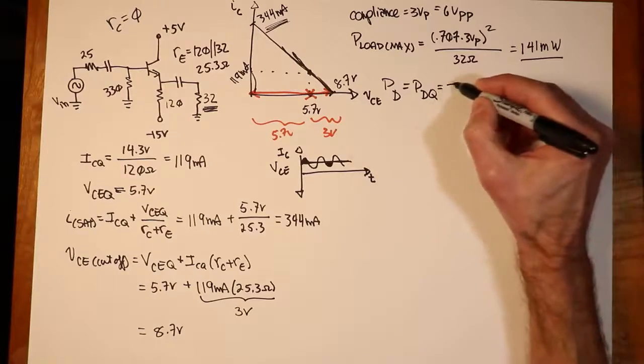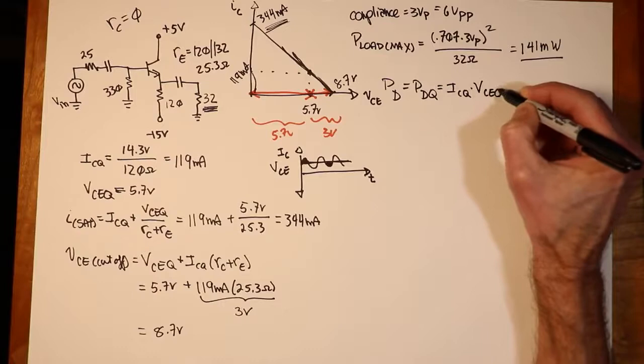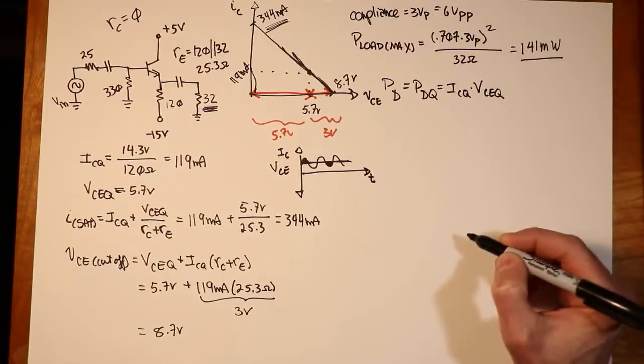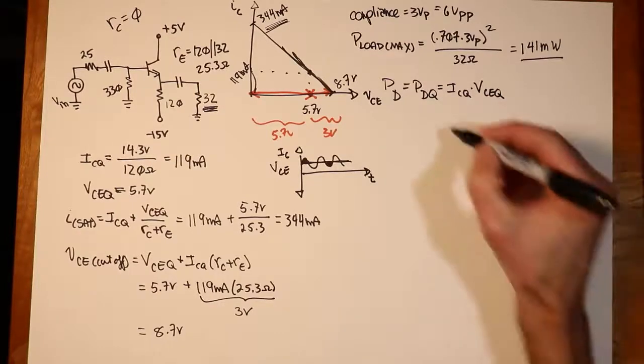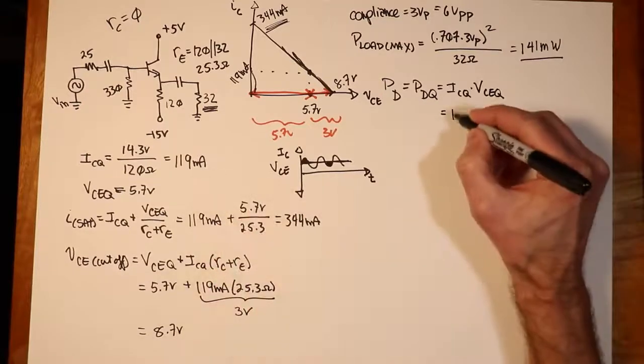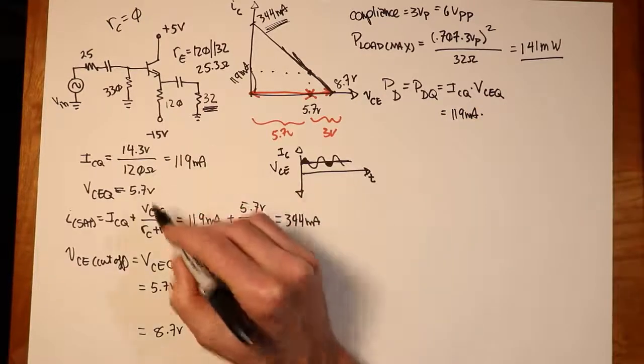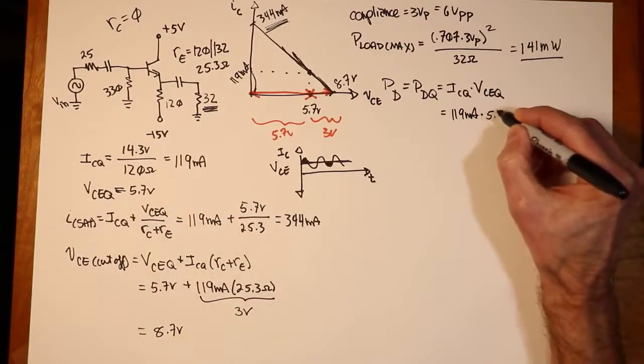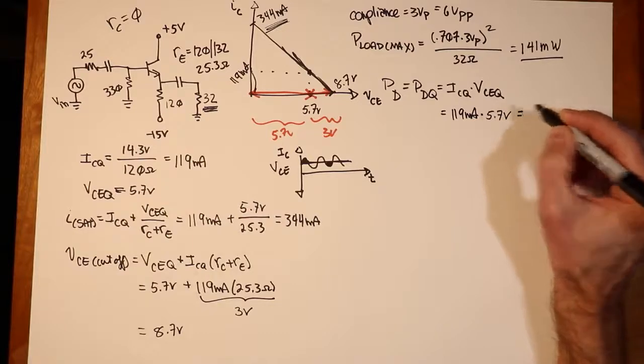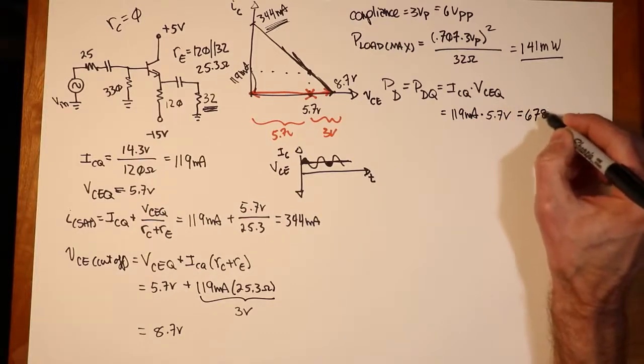So PDQ is just ICQ times VCEQ. So I just plug these numbers in. ICQ is 119 milliamps. And our VCEQ is 5.7 volts. We multiply those up and we get 678 milliwatts.